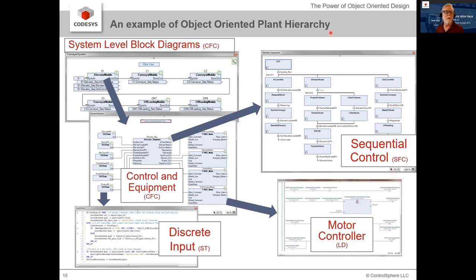Here's another example — a material handling system with an elevator module, three conveyor modules, and two offloading modules. Eventually you get down to the control and equipment diagram, where discrete inputs such as proximity switches are on the left, their outputs feed your control block, and the control block's outputs feed your output equipment — in this case, motors. IEC 61131 and CODESYS give you lots of languages so you can use the best language for the job. CFC is best for block-based design. Sequential function chart is best for state machines with discrete feedback. Ladder logic is good for simple combinatorial logic. Structured text covers basically everything else.